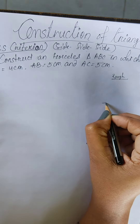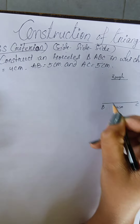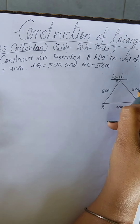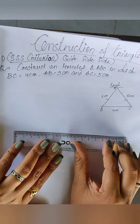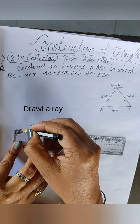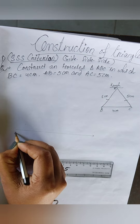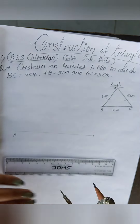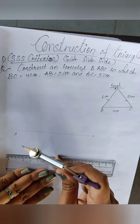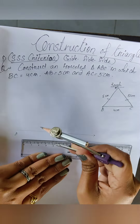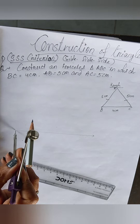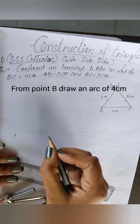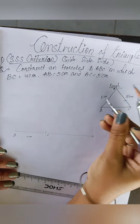First draw a rough diagram. Draw the base BC = 4 cm, then AB = 5 cm and AC = 5 cm, where these two are the equal sides. Now let's draw a ray. Name one point as B. To get point C, take the measurement of 4 centimeters with the compass and ruler — put the needle at 4 and the pencil at zero. Take B as center and draw an arc, then name it as C. So BC = 4 centimeters.